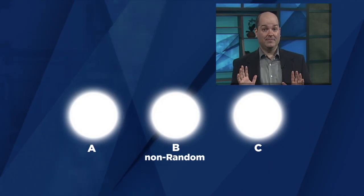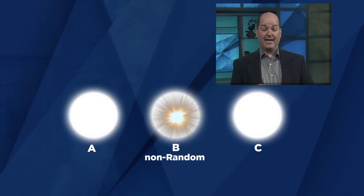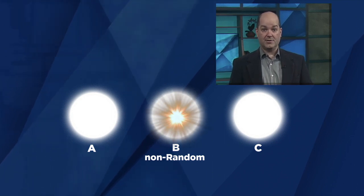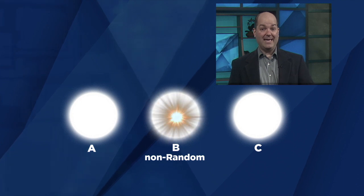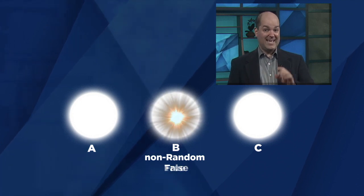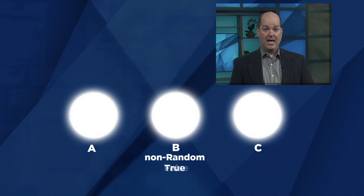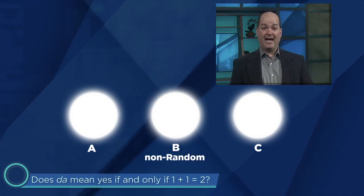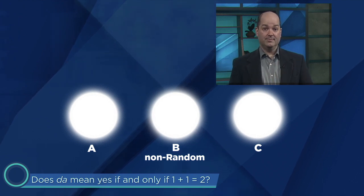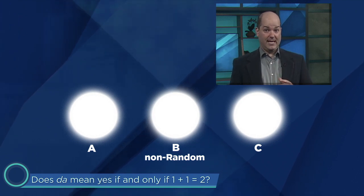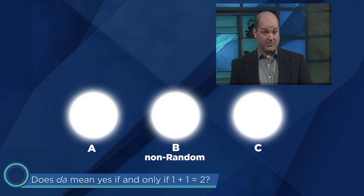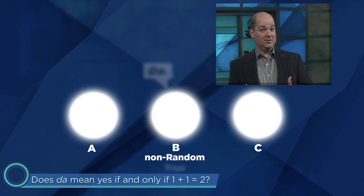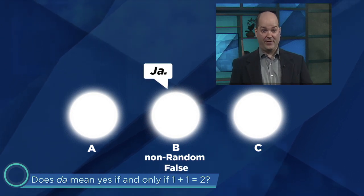Now we back up one step. Suppose we've definitively identified B as a non-random god, but we don't yet know whether he's True or False. We want to identify B definitively — is he True or is he False? We can use the solution of our second puzzle to ask, 'Does da mean yes if and only if one plus one equals two?' Since one plus one equals two is known to be true, an answer of da implies we're speaking to True, while an answer of ja implies we're speaking to False.